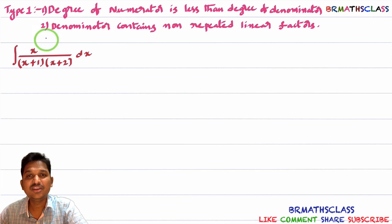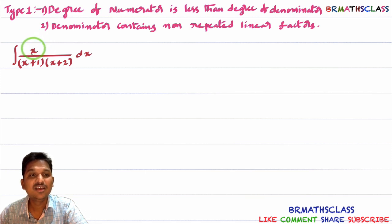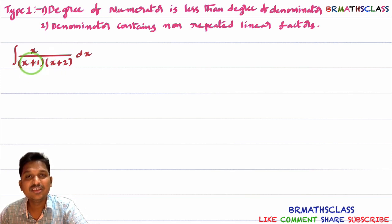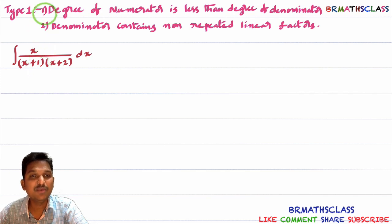There are two conditions. The first condition is: degree of numerator is less than degree of denominator. Here, the degree of the numerator is 1 (x¹). The degree of the denominator is 2 (after multiplying the two factors, you get an x² term). Since degree of numerator (1) is less than degree of denominator (2), the first condition is satisfied.